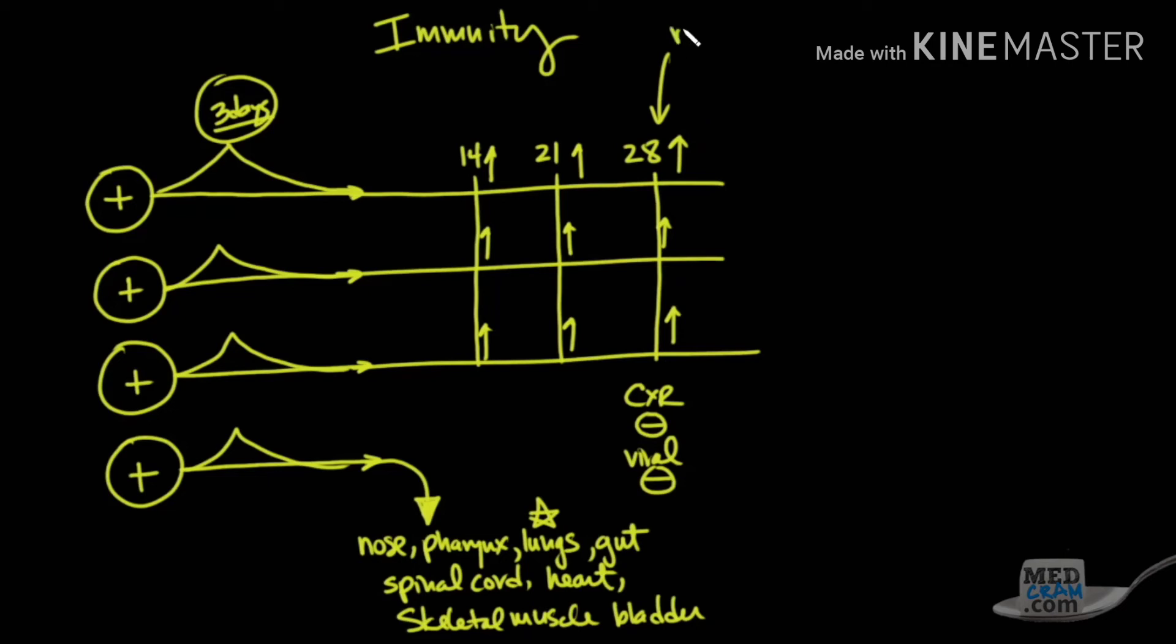What they did on day 28 was they reinfected the remaining three monkeys and monitored them. Other than an initial spike in temperature in all three of them, they showed none of the signs that they had back here with the weight loss and the signs and symptoms that you would expect with a viral infection. None of those signs were present other than a very small spike in body temperature, which quickly went away.